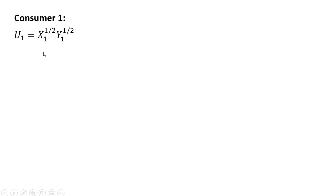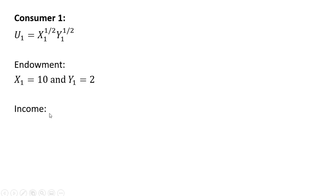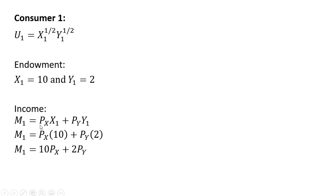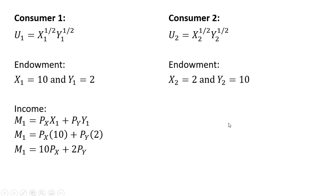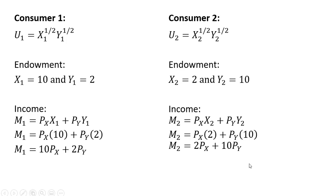We're going to set up our two-person exchange economy. Here is consumer one's utility for good X and good Y. The consumer's initial endowment is ten units of good X and two units of good Y. Deriving this person's budget constraint: income equals the price of good X times the endowment of good X plus the price of good Y times the endowment of good Y. Making those substitutions, and doing a similar thing for the second consumer.